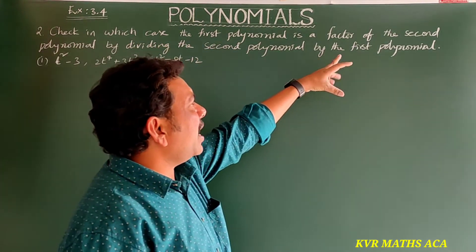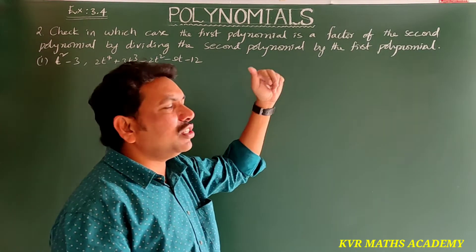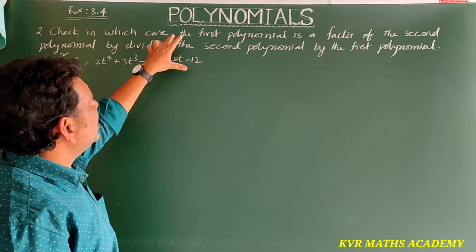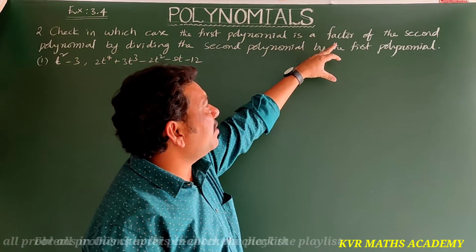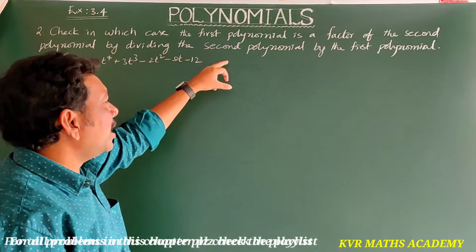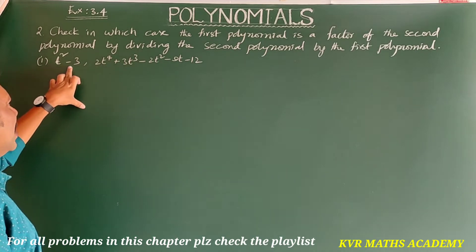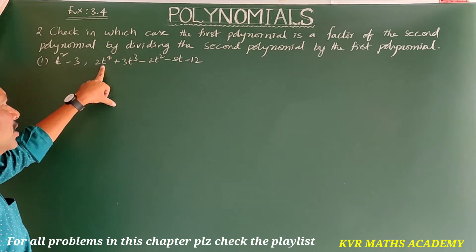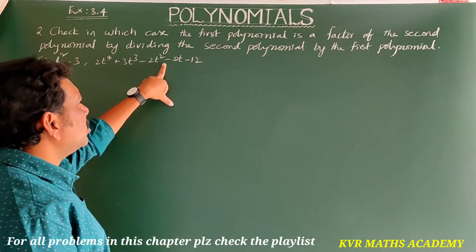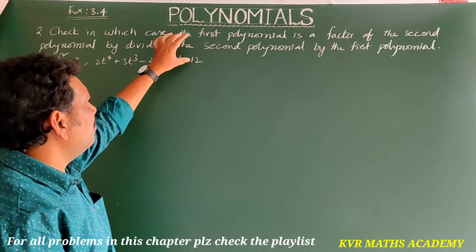The second problem in Exercise 3.4: Check in which case the first polynomial is a factor of the second polynomial by dividing the second polynomial by the first polynomial. The two polynomials given are: t² - 3, and t⁴ + 3t³ - 2t² - 9t - 12. Three questions are given in this problem.